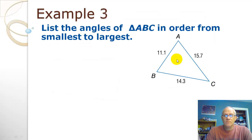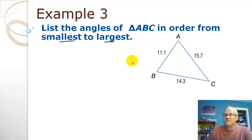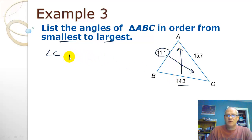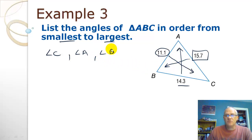Here's a triangle with sides given. We want to write the angles in order from smallest to largest. We look for the smallest side first — that's the shortest one, and straight across from it is angle C, which comes first. The next biggest side is 14.3, and the angle across from that is angle A. The longest side is 15.7, and straight across from that is angle B. So the order from smallest to largest is angle C, angle A, angle B.